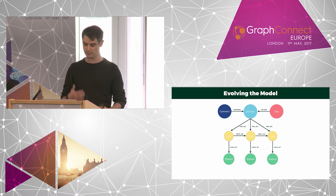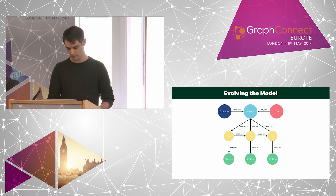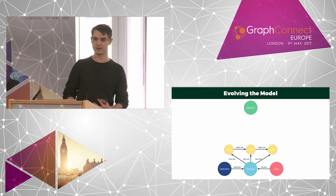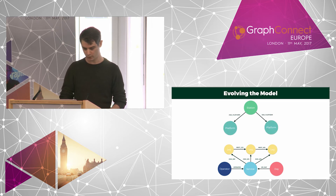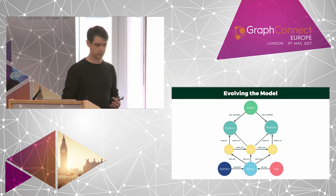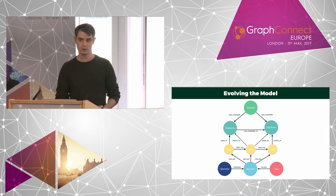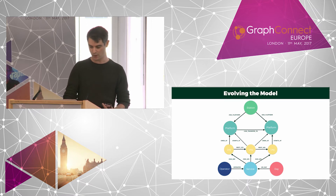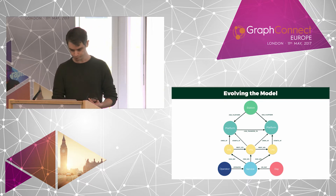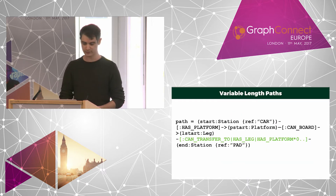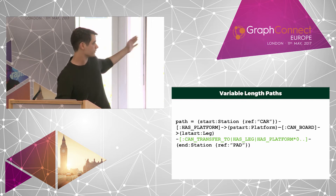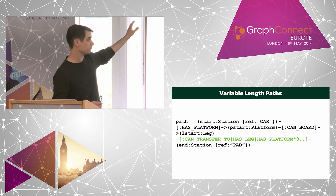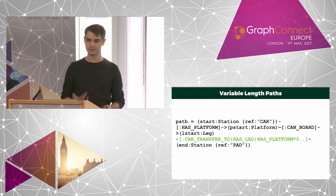Still, I found this model wasn't accurate enough when considering changing between services. To handle this accurately, I had to add platform data to the model. A leg would start and stop at a platform, and where a traveller would need to transfer between two platforms, there was a can-transfer-to relationship placed between them with properties for distance and transfer time — ensuring the user can actually catch the train. This is really easy in Cypher: all I needed to do was create a variable length path, and Neo4j allows you to traverse different relationship types from start point to end point. The Cypher engine does this out of the box — you don't need any computer science background. I dread to think how complex this would be in a relational database.